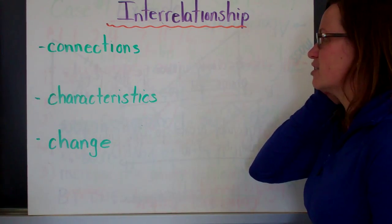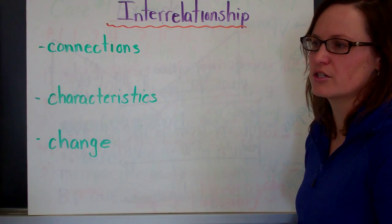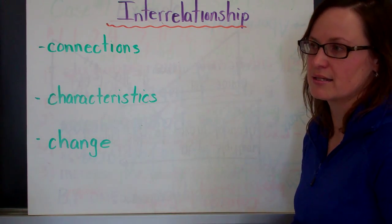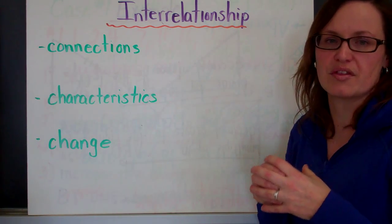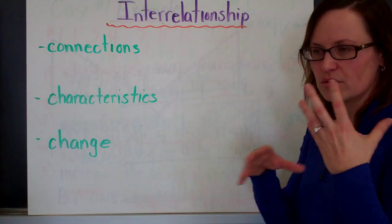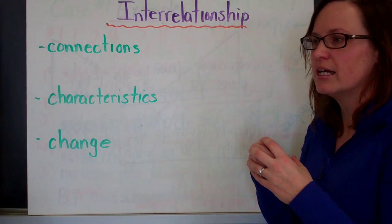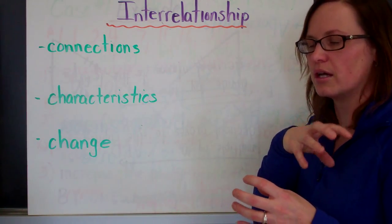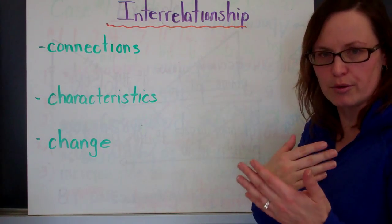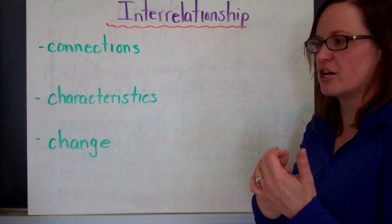So the first one is called interrelationships. Interrelationships ask questions about connections and relationships between things. So if you're thinking about a specific region, you're thinking about the characteristics within that region, what makes it, how is it made and what's it made of. And then you can think about the interactions with the surrounding characteristics, the area that's around it and how those two connect and what relationship they have.